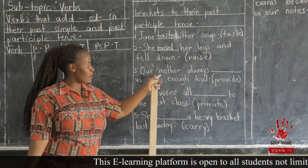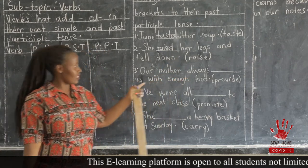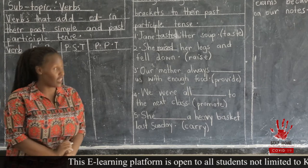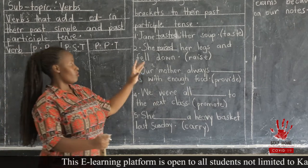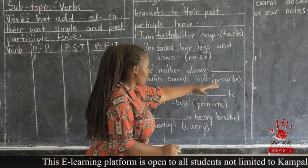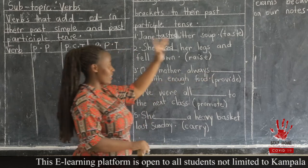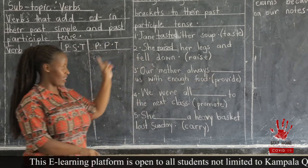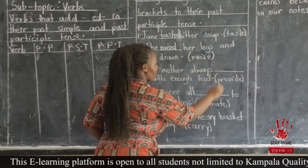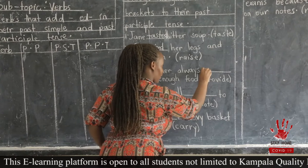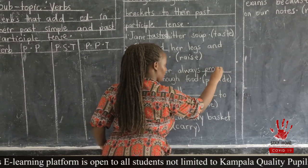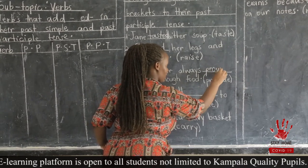Number three: Our mother always ___ us with enough food — in brackets we had 'prepare.' We were supposed to see whether to add D or IED. Therefore, the answer here is 'prepared' by adding D.